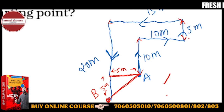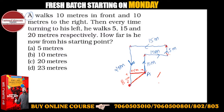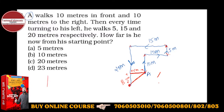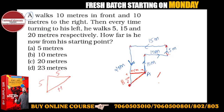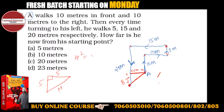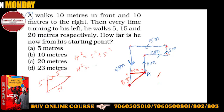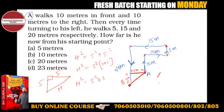Now what you have to calculate is AB — how far is he from the starting point. It is making a right-angle triangle. So H squared equals 5 squared plus 5 squared, which is 5 squared into 2.